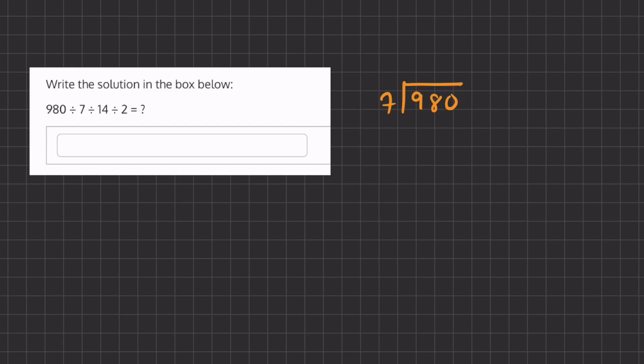Alright, so in this problem we have a sequence of division problems. Let's start with our first one. We're going to start from the left to the right. So we have 980 divided by 7, and we're going to solve this using long division.